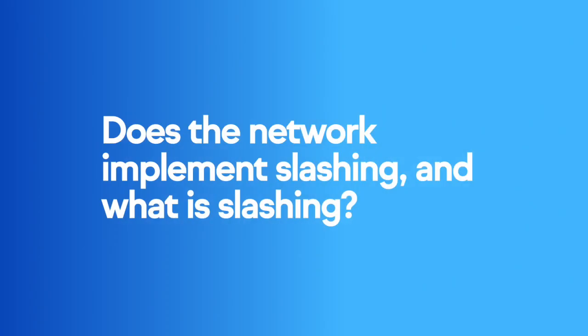Question 5: Does the network implement slashing, and what is slashing? Most proof-of-stake blockchains have reward and penalty mechanisms. Good behaviors are encouraged through rewards — validators receive rewards for both attesting and proposing blocks to the blockchain as a percentage of their stake. On the flip side, bad behaviors, inactivity, and dishonest validations are subject to a penalty called slashing. This mechanism is designed to discourage malicious validator behavior and to incentivize network participation, as well as node security and availability.